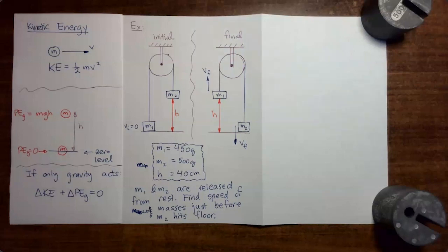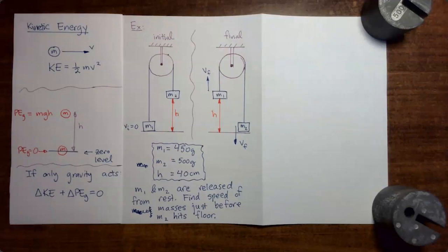In this video, we're going to do a second example problem involving conservation of mechanical energy. Conservation of mechanical energy says that if you have a process where only conservative forces act, then the combination of kinetic energy and potential energy during that process is a constant.